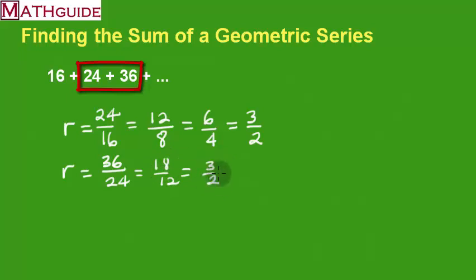I notice I could divide them by 6. That's 3 halves. It looks like indeed I do have a geometric series, because they have the same common ratio.